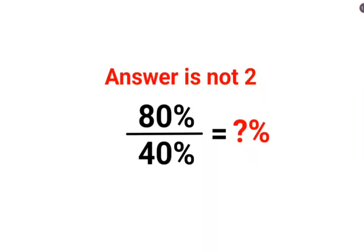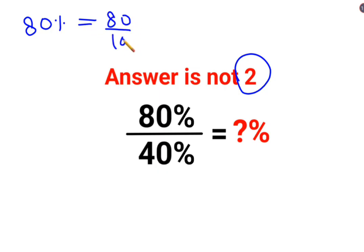Welcome everyone. Today we are going to understand why the answer for this question is not supposed to be 2. See 80 percent can be written as a fraction by dividing it by 100. So basically you are doing 80 upon 100 divided by 40 upon 100.